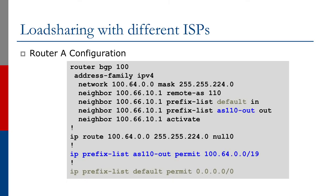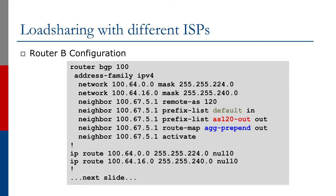We still need redundancy, and that's what our aggregates do. Our upstream providers still announce the default route. Router A has a simple configuration - the default is allowed in, the aggregate is allowed out. Router B is where the traffic engineering happens. We let the default in, but outbound, not only do we allow our aggregate out, we also let one subnet of the aggregate - in this case the /20 - out. And we have the route map 'ag prepend', which looks for the aggregate and does the prepend.